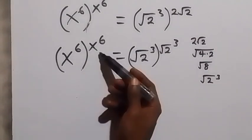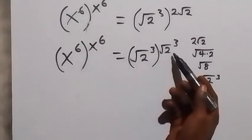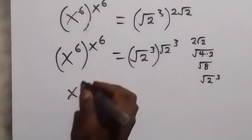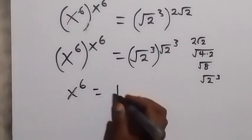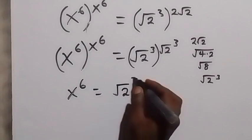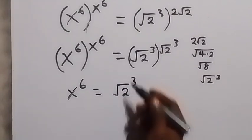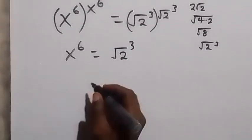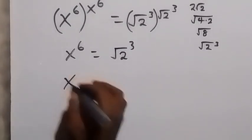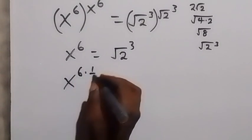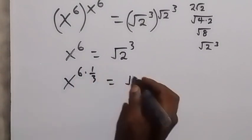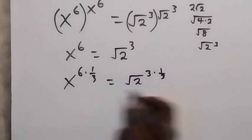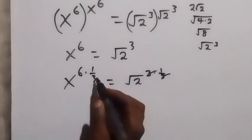The base and the power are the same thing on both sides, so we can equate the two. We have x raised to power 6 equals root 2 raised to power 3. Now let's remove this power of 3 by multiplying both sides by power 1 over 3. We have x raised to power 6 times 1 over 3, equals root 2 raised to power 3 times 1 over 3. The power cancels out.